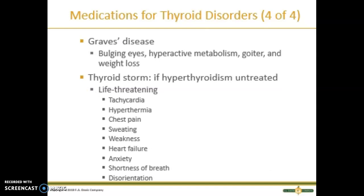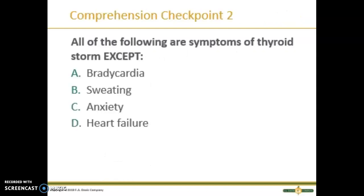To recap: Graves disease presents with bulging eyes, hyperactive metabolism, goiter, and weight loss. Thyroid storm symptoms include tachycardia, hyperthermia, sweating, weakness, and disorientation — important symptoms to know when dealing with endocrine system disorders. Comprehension checkpoint two: all of the following are symptoms of thyroid storm except... You should have chosen bradycardia.